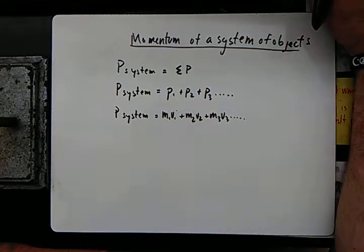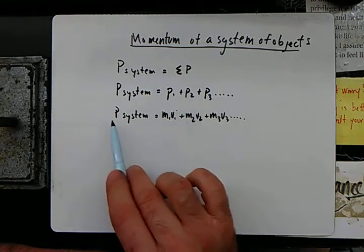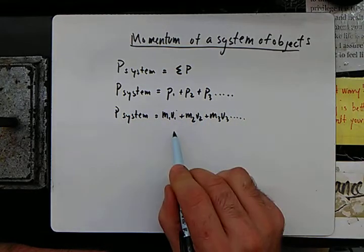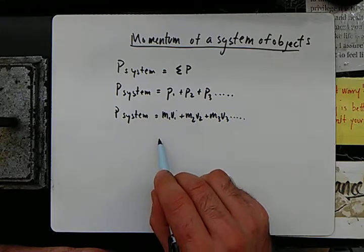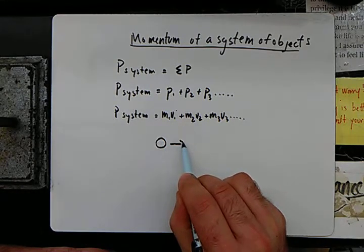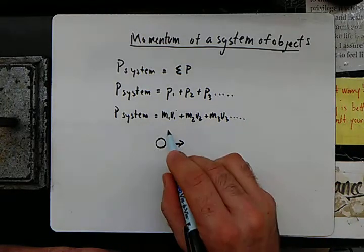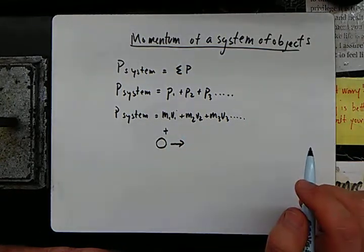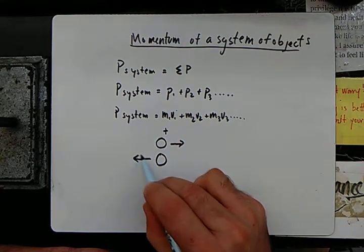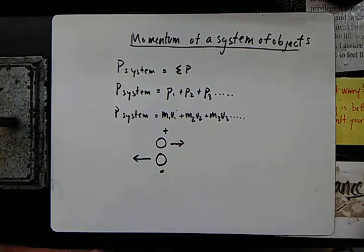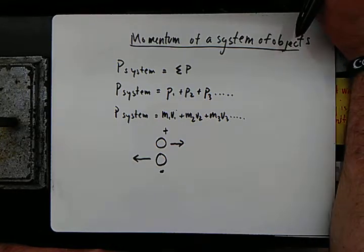We've got to decide on the momentum of a system. Let's use our current terminology: if there is something moving this way, we'll call it positive momentum. If something's moving this way, we'll call it negative momentum.